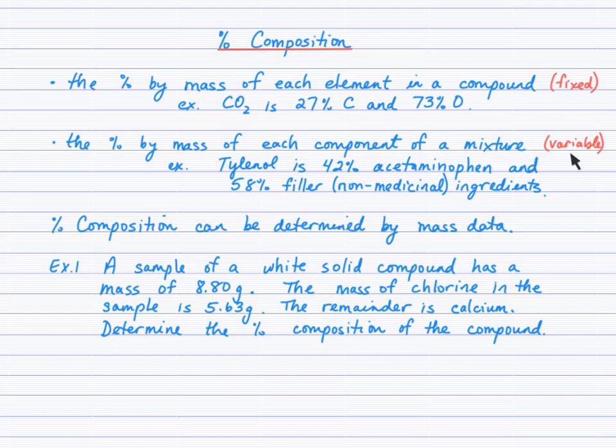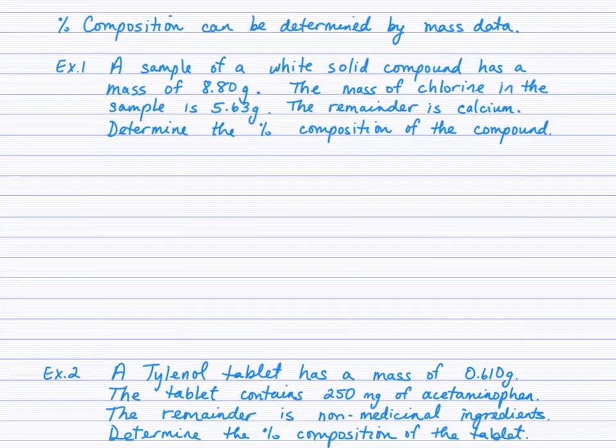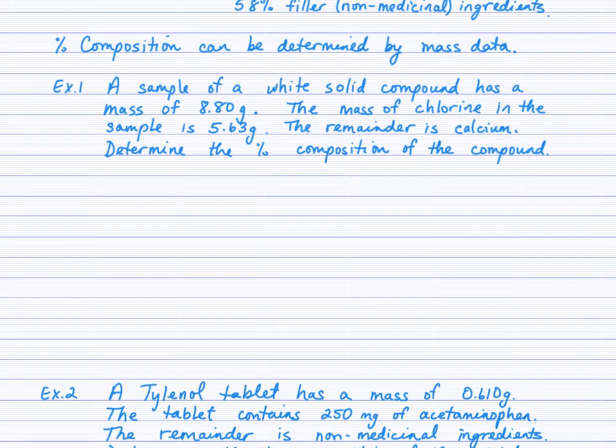Here's an example: a sample of a white solid compound has a mass of 8.80 grams. We're going to use this mass data to determine percent composition. The mass of chlorine in the sample is 5.63 grams and the remainder is calcium. We need a percent for calcium and a percent for chlorine. You could pause the video, work it out, and then check back.